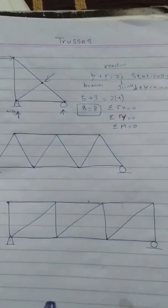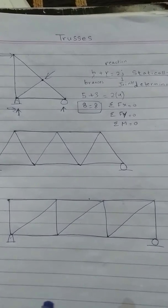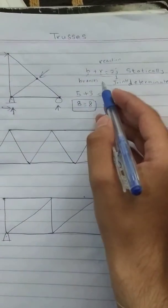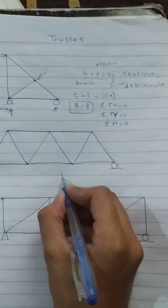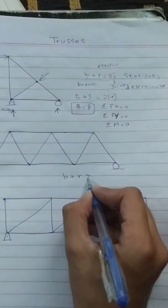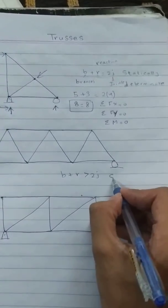Now if the result of this equation b + r is greater than 2j, then it will be statically indeterminate.